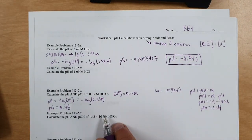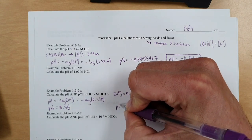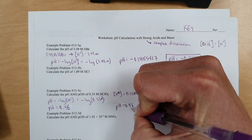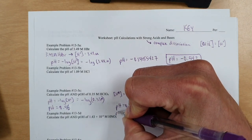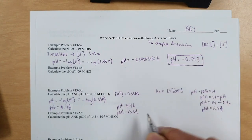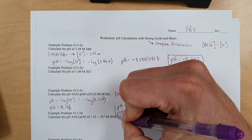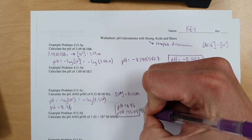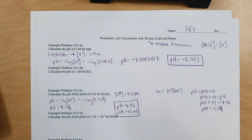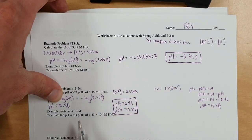To summarize: pH equals 0.46 and pOH equals 13.54. These both go to the hundredths place — they should go to the same decimal place. That's the recommended method.